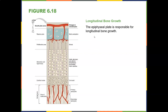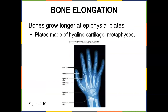The epiphyseal plate is responsible for longitudinal bone growth. On an X-ray it appears as a translucent line. We worry about fractures along the epiphyseal plate. It consists of a band of hyaline cartilage in the middle with a metaphysis on each side — that's where cartilage thickens by cell division and is replaced by bone. In a child's X-ray, all those translucent lines are open epiphyseal plates, not fractures.